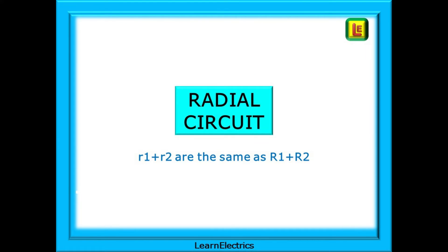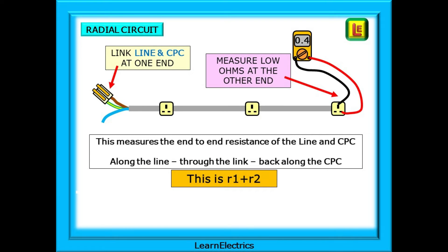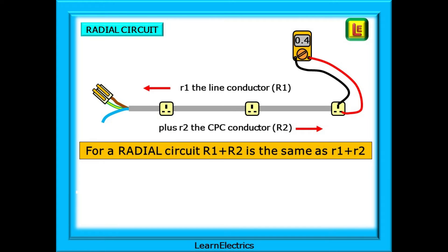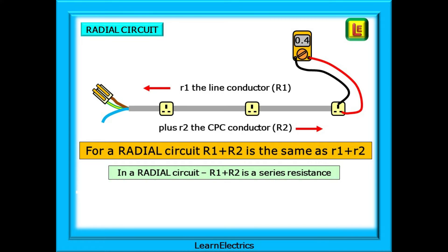Let's begin with a radial circuit, where we will find that little r1 and little r2 are the same as big R1 plus big R2. To find big R1 plus R2, we link the line and CPC at the consumer unit and measure for low ohms at the furthest point. This measures the end-to-end resistances of the line conductor, through the link and back along the CPC conductor, giving us little r1 plus little r2. As this is a radial circuit, big R1 plus R2 is the same as little r1 plus r2 — the effective resistance equals the actual resistance. R1 plus r2 is a series resistance.